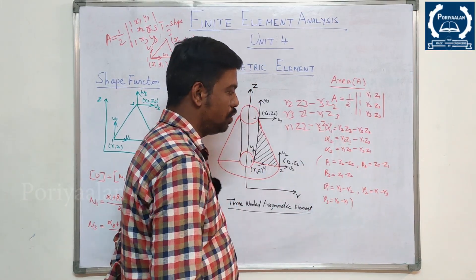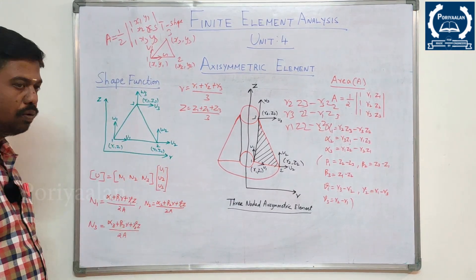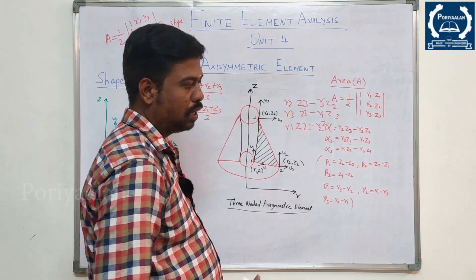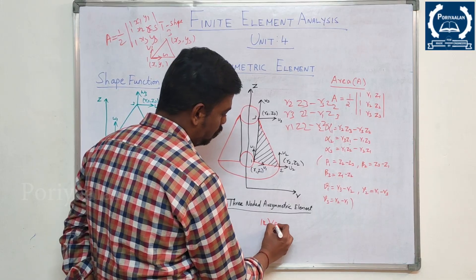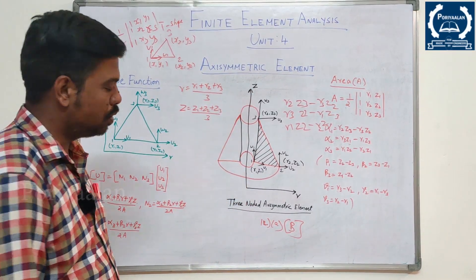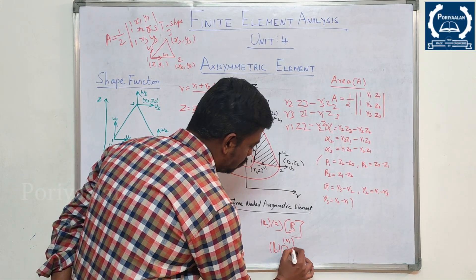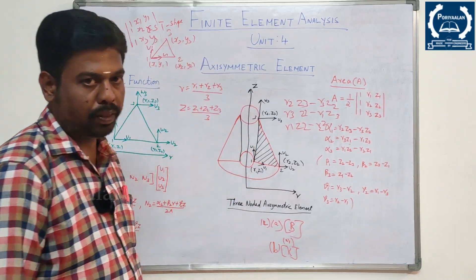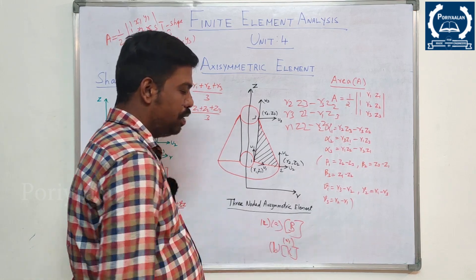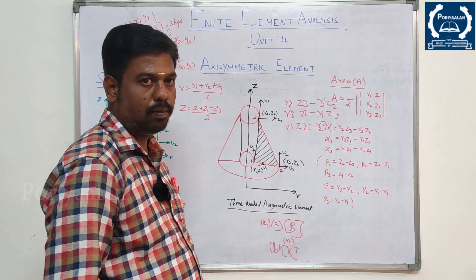Substitute and find the values of shape functions N1, N2, and N3. For the Axisymmetric element, the important question is to find the B matrix. The 14th part (a) question will ask for the B matrix, and part (b) should ask for the stiffness matrix K. We multiply the B matrix to find K.